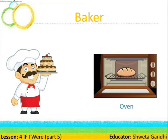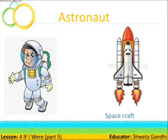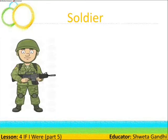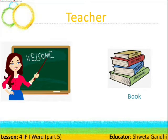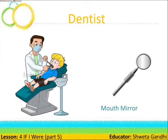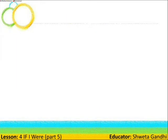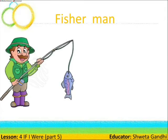Then the astronaut uses a spacecraft to reach outer space. The soldier uses a gun. The teacher uses books. The dentist uses many tools — one very common tool used by all dentists is used to examine the patient's mouth.